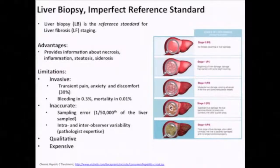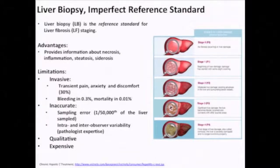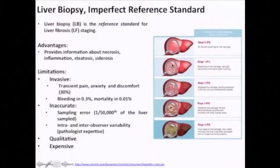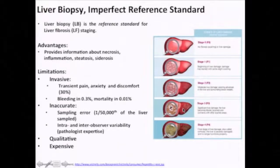Liver biopsy is an imperfect reference standard. Looking at the images showing patterns of fibrosis in the liver, you can see small nodules of fibrosis that coalesce into bridging fibrosis and subsequently cirrhosis. You could easily place the biopsy needle into one of these nodules and get an artificial impression that the patient has a much higher stage of cirrhosis than they actually do. That's one key advantage of all non-invasive techniques — a reduction in sampling error.